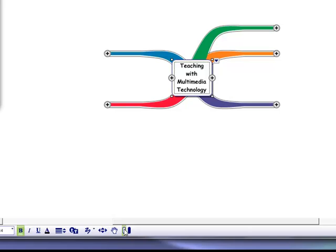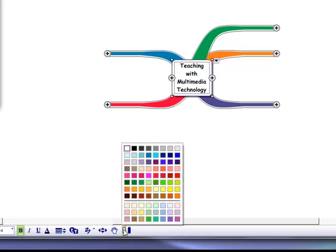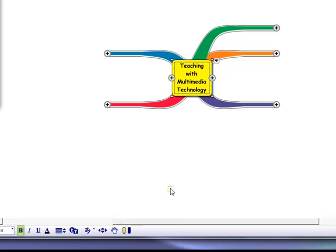you move your mouse to this button here. Then you click on it. Now I select the yellow. So now my text box becomes yellow. It has yellow background.